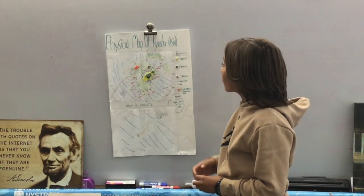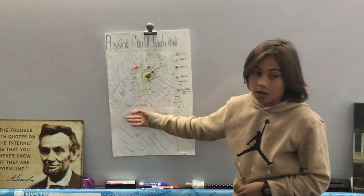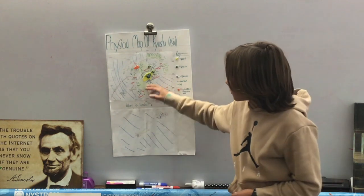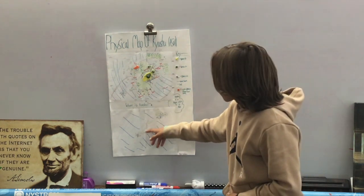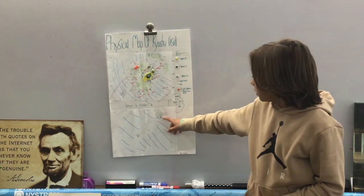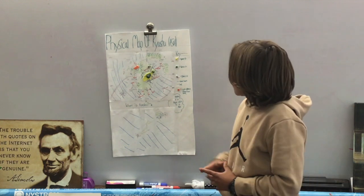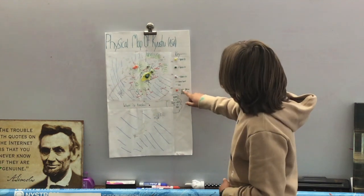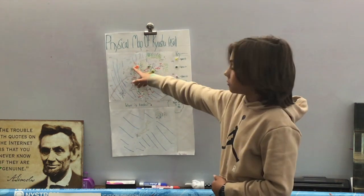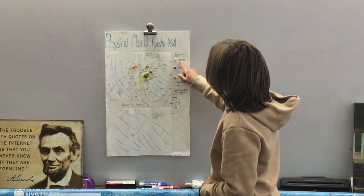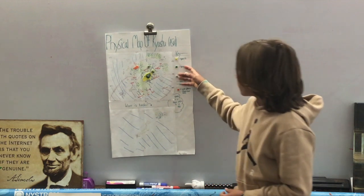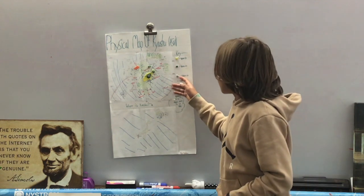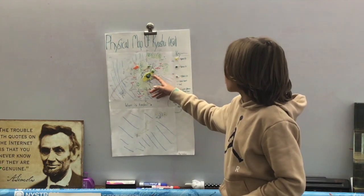I am doing a physical map of Kyushu, which is in Asia. Here you can see where Kyushu is — it's an island in Japan, down here. I only did this big part of Kyushu. Here's where Japan is located in Asia and in the world. America is right there. The yellow represents 4,000 feet, the green represents 5,000 feet, and the gray represents 5,500 feet or more.